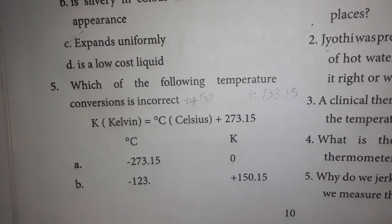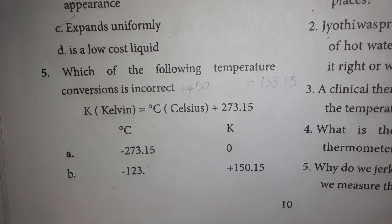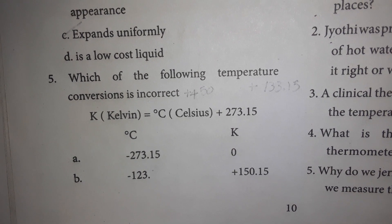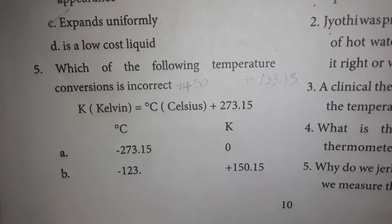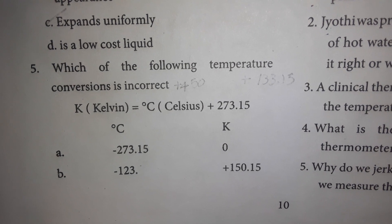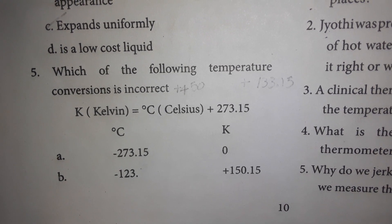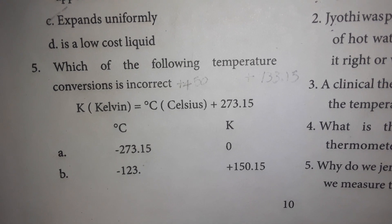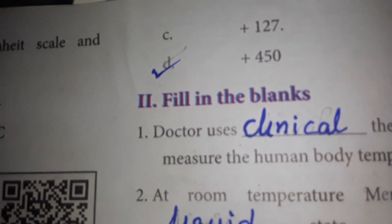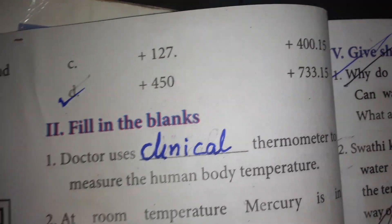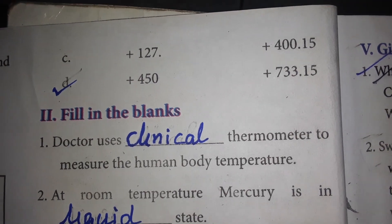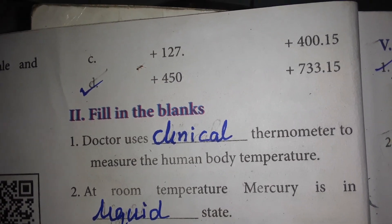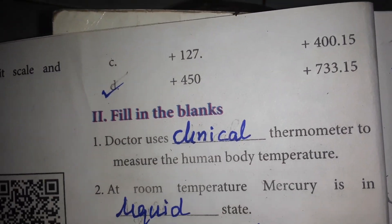Next: which of the following temperature conversions is incorrect? Kelvin is derived from Celsius by adding 273.15. So if you see Celsius minus 273.15, then Kelvin is 0 and Celsius is 150.15 — that is the correct answer to the question. Option C is the incorrect option. Similarly, Celsius 400.15 equals Kelvin — that is a correct statement, so option D is the incorrect option.